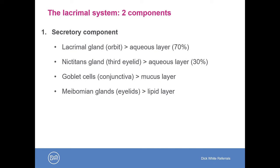The nictitans gland, or the gland of the third eyelid, also contributes significantly to the aqueous layer, contributing 30% of the tear film. Because this contribution is so important, this is why it is advised against removal of prolapsed nictitans glands — so-called cherry eye — as such removal can lead to an increased risk of developing aqueous deficiency in later life.